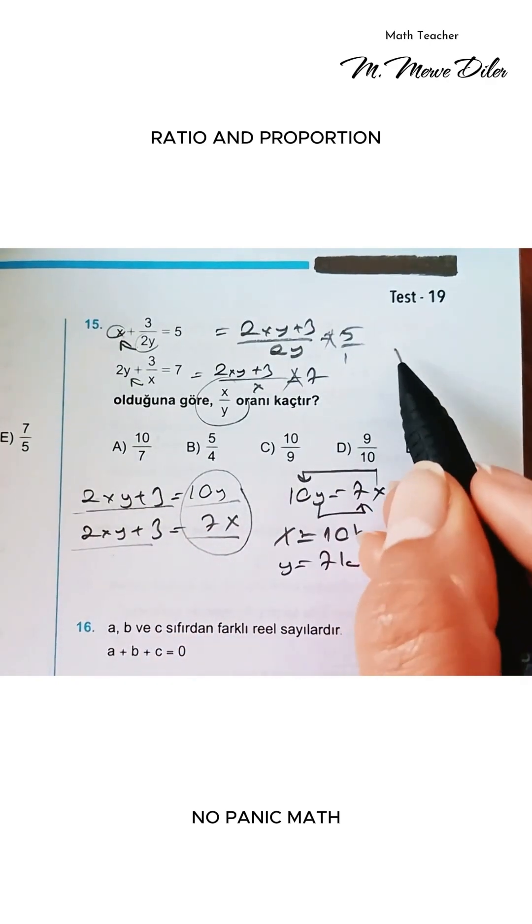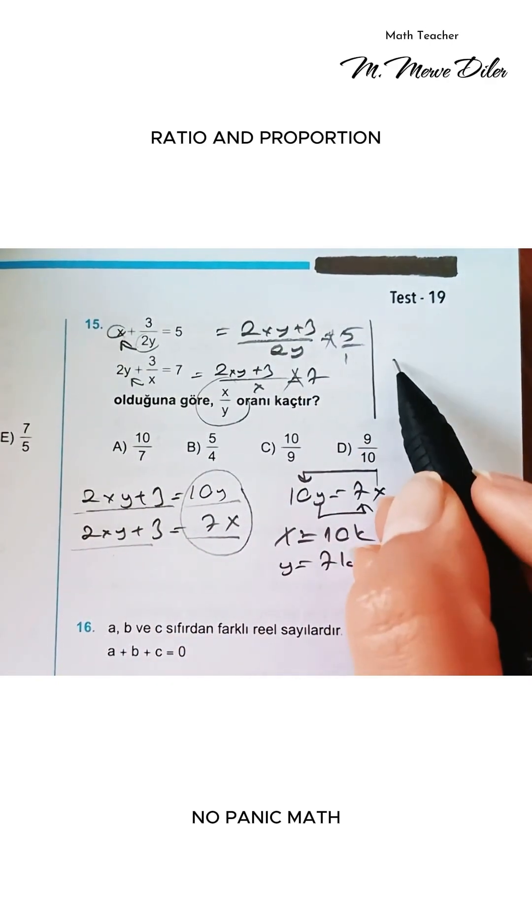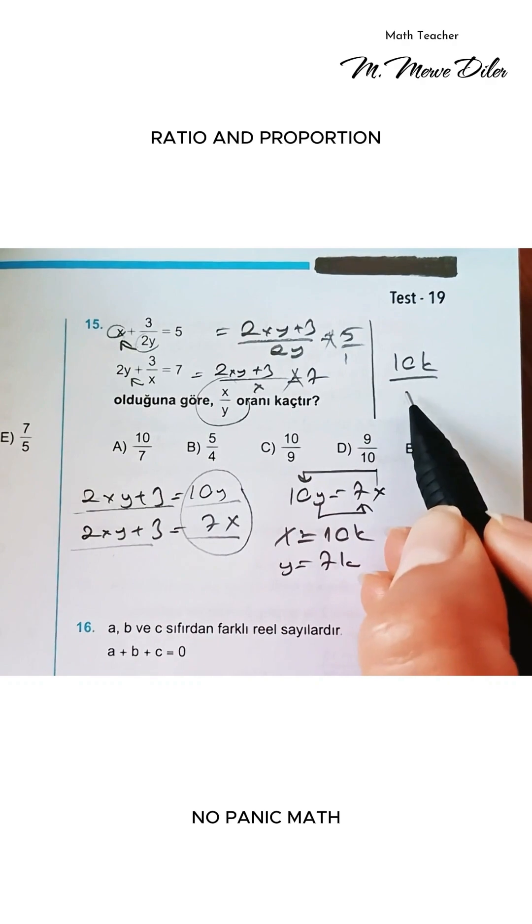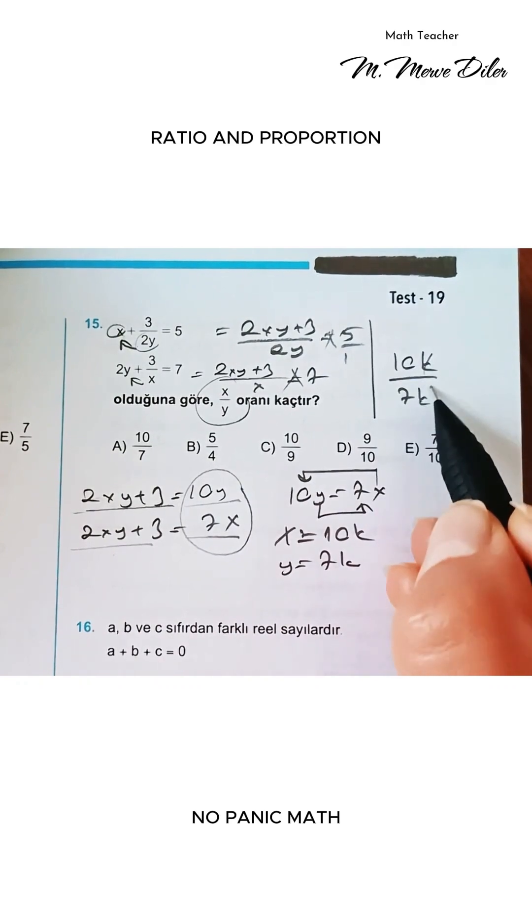They asked me for x over y, friends. Let's show it like this. We'll call x 10k, and for y, we'll call it 7k. Let's simplify. Our result will be 10 over 7.